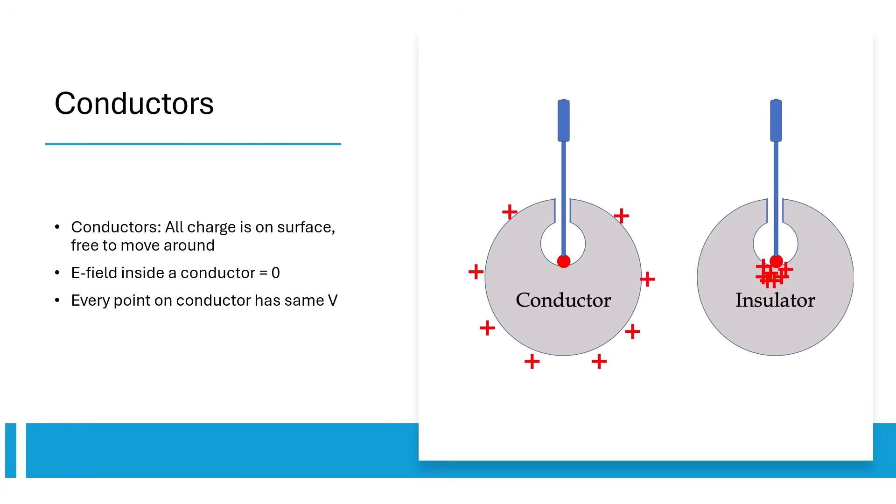Finally, because charges are free to move, every point on the conductor has the same potential. If there is a point with lower potential, the charges would instantly move to that point, balancing it out.